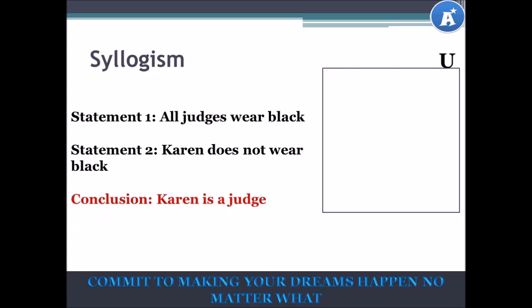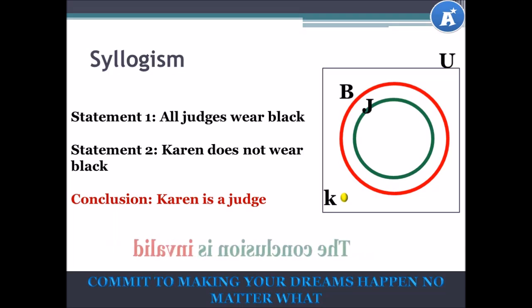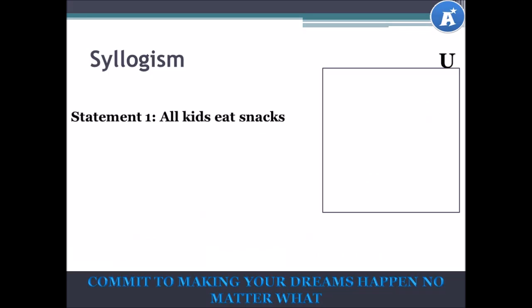Let's try another. Statement 1: All judges wear black. Statement 2: Karen does not wear black. Conclusion: Karen is a judge. Let B represent all persons who wear black, and J represent all judges. If statement 1 is true, all judges must lie within set B. Karen does not wear black, so she is on the outside of B. Since she does not belong within B, Karen cannot be a judge. Thus, our conclusion is invalid — it is false.